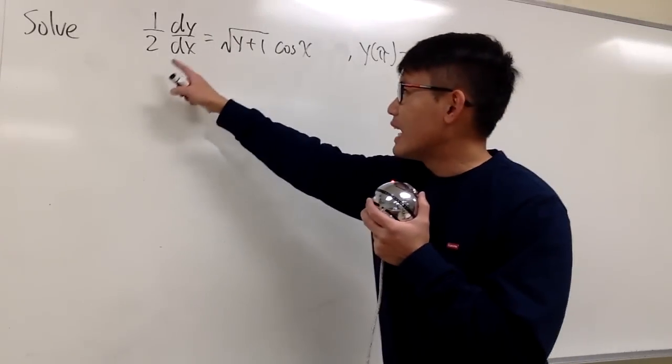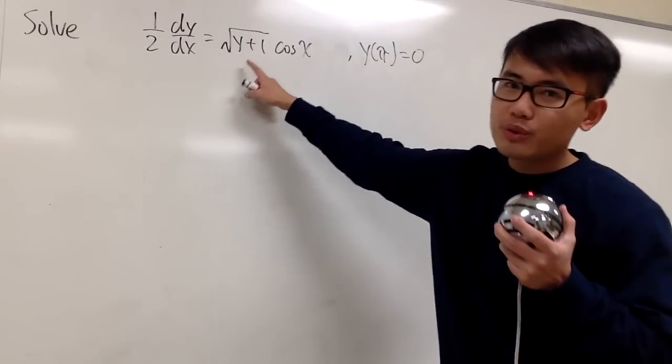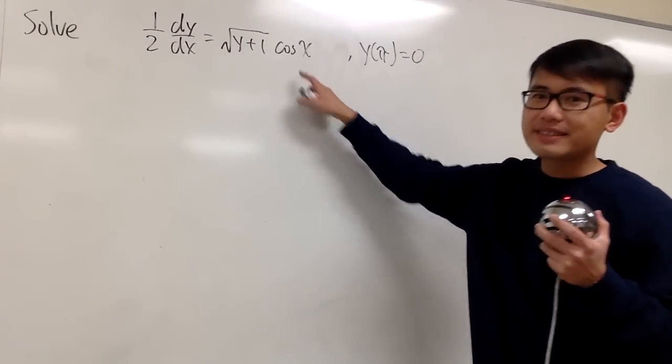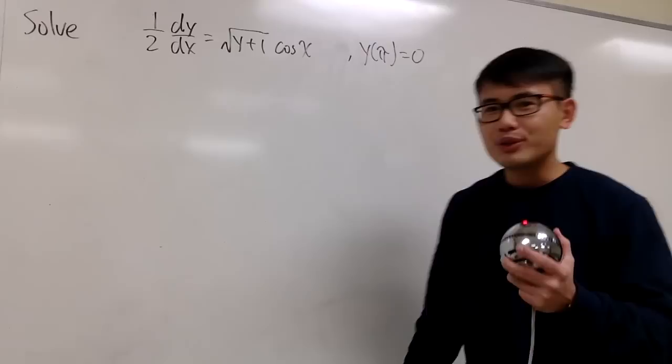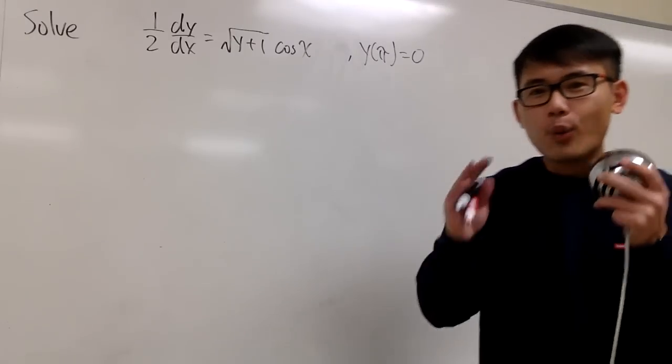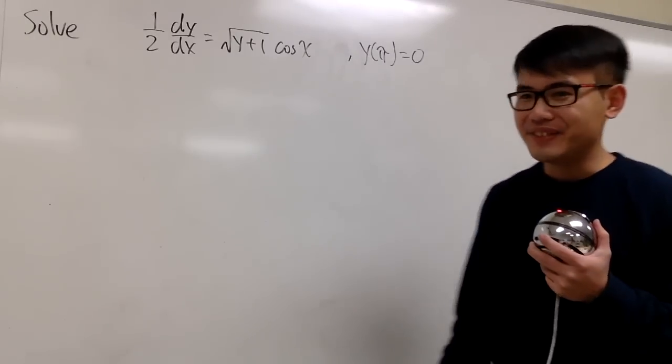Let's solve this differential equation. We have 1 over 2 dy dx is equal to square root of y plus 1 times cosine x. And we also know y of pi is equal to 0. So be sure to solve for that constant.